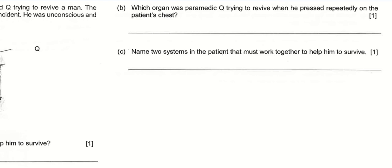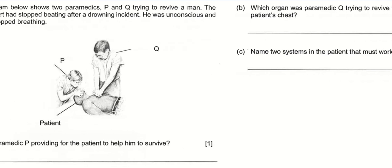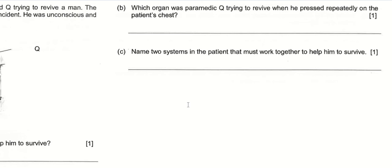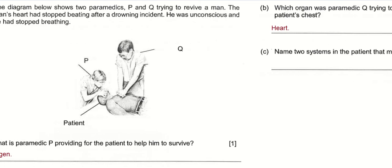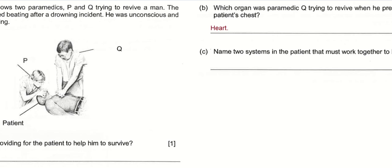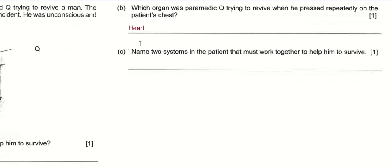Which organ was paramedic Q trying to revive when he pressed repeatedly on the patient's chest? Q is the one standing up and pressing repeatedly on the patient's chest. It's not just pressing the chest — because inside the chest there is the heart. That's the organ he's actually trying to compress and release. So the answer here is the heart. The heart is what paramedic Q is trying to activate again because the patient's heart had stopped beating. Paramedic Q is trying to make the heart pump again by pumping the chest.